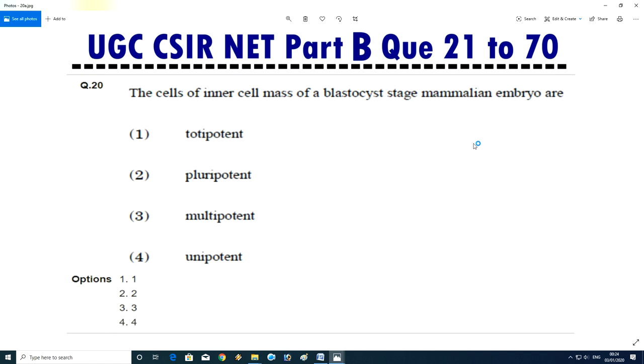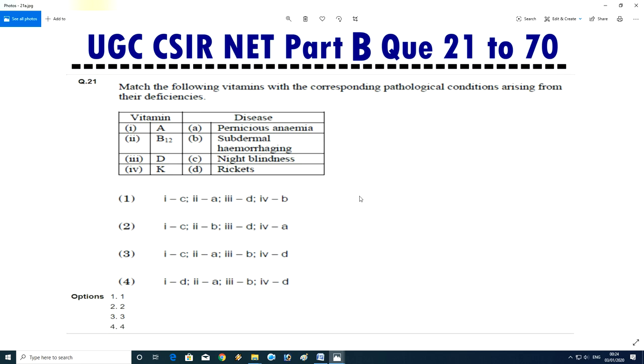Question No.21/22 - The cells of an inner cell mass of a blastocyst stage mammalian embryo are totipotent, pluripotent, multipotent, or unipotent. The answer is B, pluripotent.